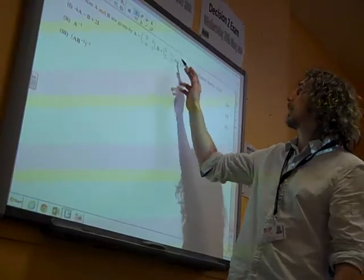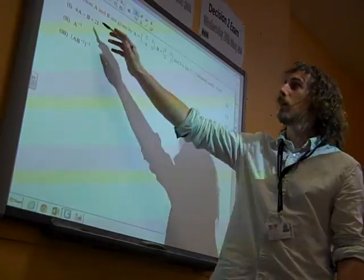Right, we're going. So here's A and B, and I is the 2x2 identity. Work out these bits.